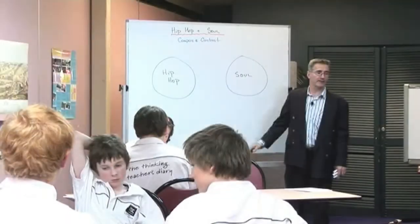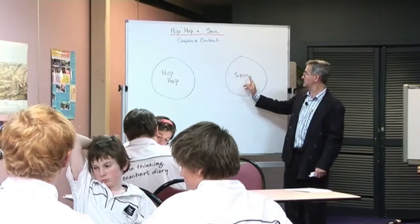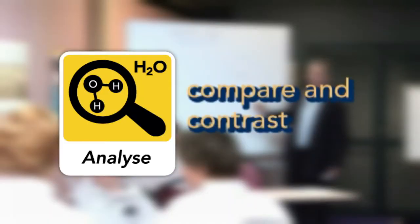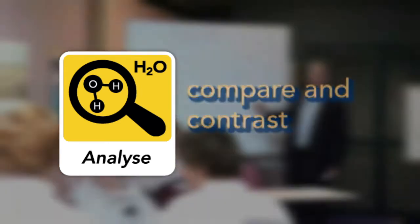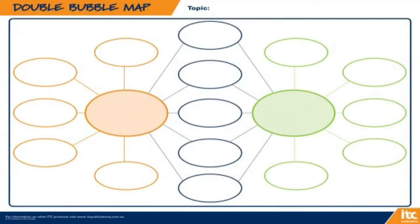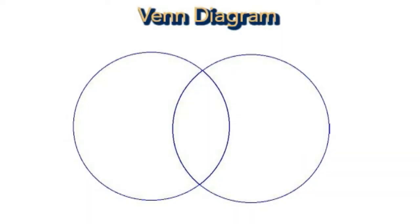The double bubble map is an excellent analytical tool to compare and contrast any two characters, policies, objects, stories or viewpoints. The graphic layout of the double bubble map allows students more writing space compared to similar compare and contrast maps, such as the Venn diagram.